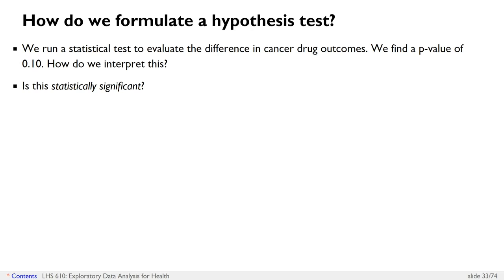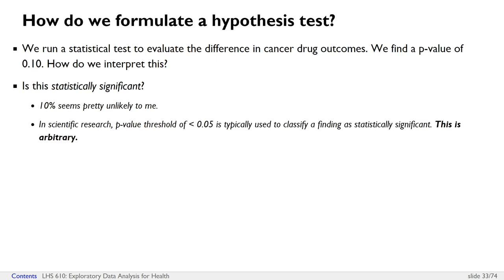So how do we interpret a p-value of 0.10? The first thing you might want to jump to is to answer this question of, is that number statistically significant? Especially if you're familiar with reading scientific papers. On the face of it, a probability of finding the observer something more extreme of being 10% under the null hypothesis basically means that if the null hypothesis was true, our observed data has a probability of 10%. And that seems pretty unlikely to me. But in scientific research, there's this convention of a p-value threshold of less than 0.05, which is used to classify a finding as statistically significant.